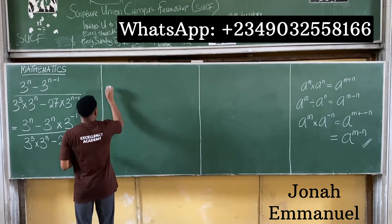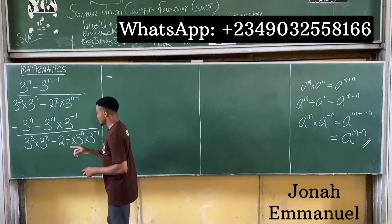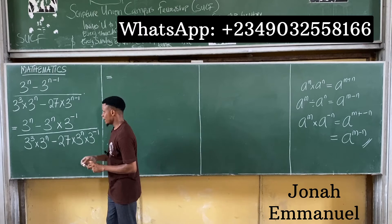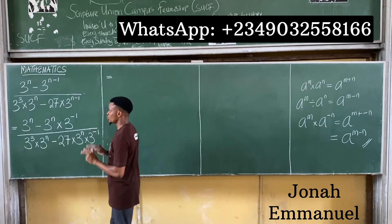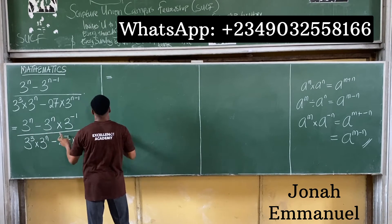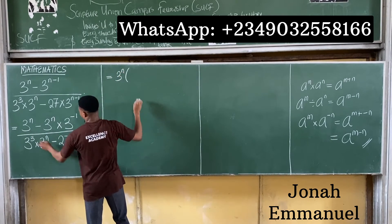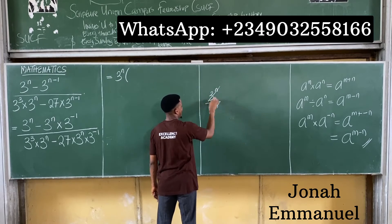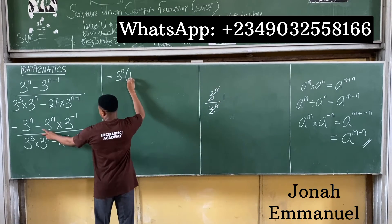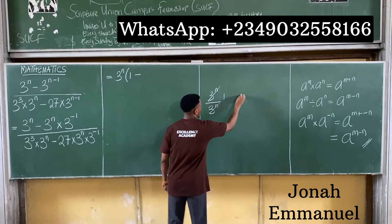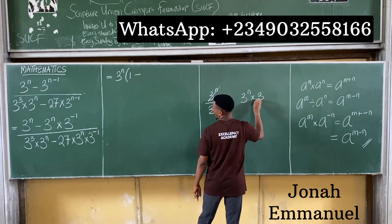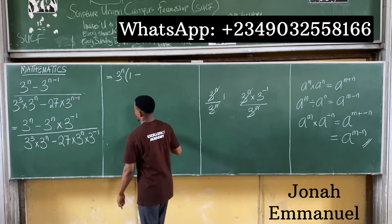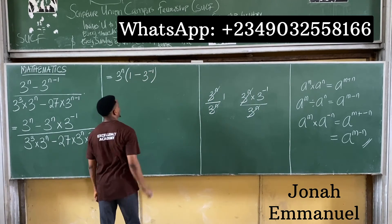Simplifying further, in the numerator we can factorize by taking out what's common, which is 3 to the power n. Dividing 3 to the power n by 3 to the power n cancels, leaving 1. Then 3 to the power n times 3 to the power minus 1 divided by 3 to the power n cancels the 3 to the power n, leaving 3 to the power minus 1. So the numerator becomes 3 to the power n times (1 minus 3 to the power minus 1).